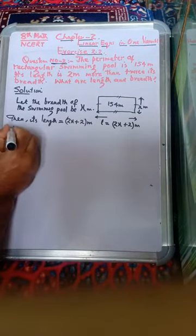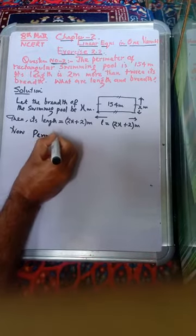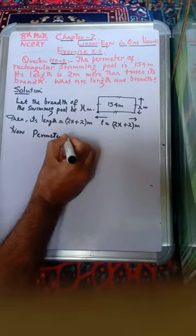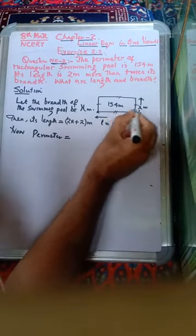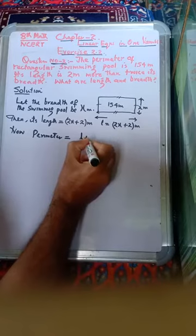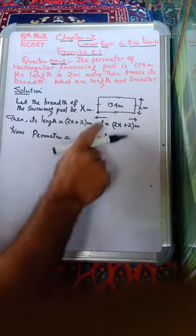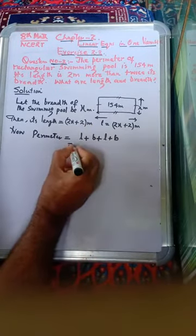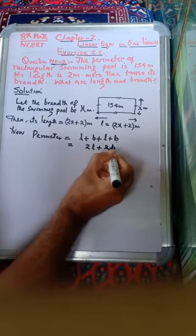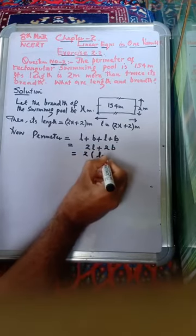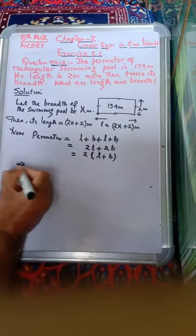Now its perimeter is the sum of the sides. Perimeter is equal to sum of sides — that means length plus breadth plus length plus breadth. So L plus L is 2L, and B plus B is 2B. So perimeter equals 2L plus 2B. Now perimeter is given as 154 meters.